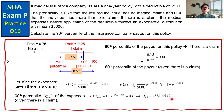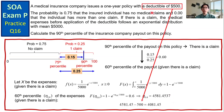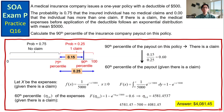This is the expenses before the application of the deductible of $500. So subtracting $500 from the value we calculated, we get the answer $4,081.45. This is the 90th percentile of the insurance company payout on this policy.